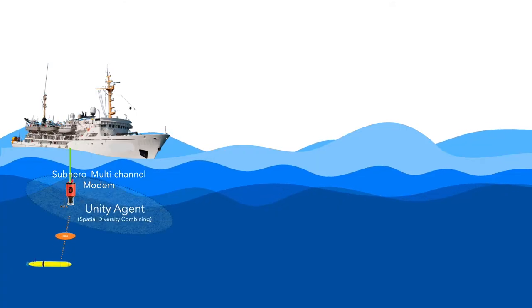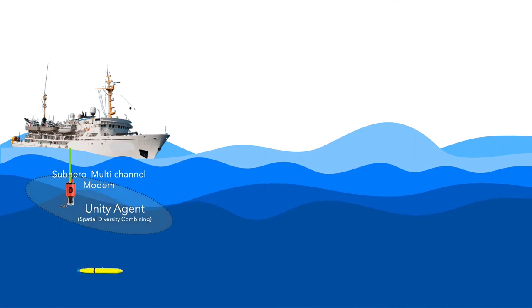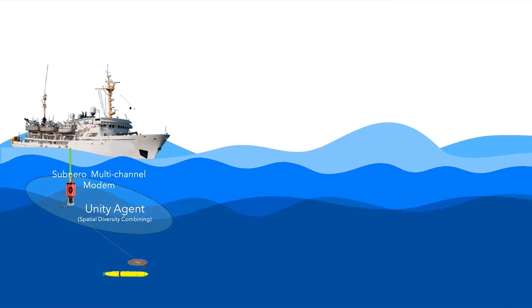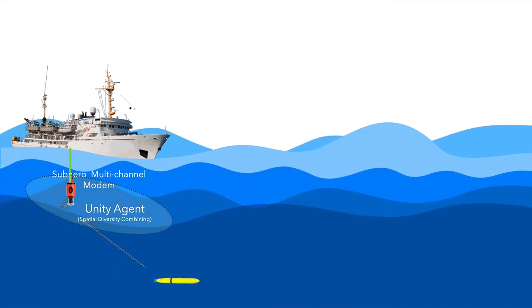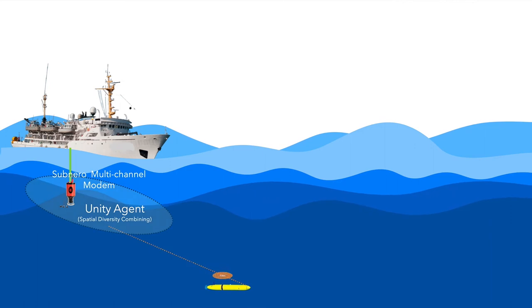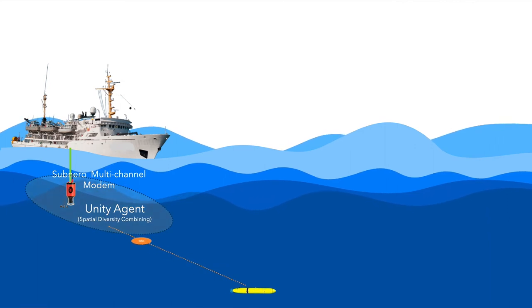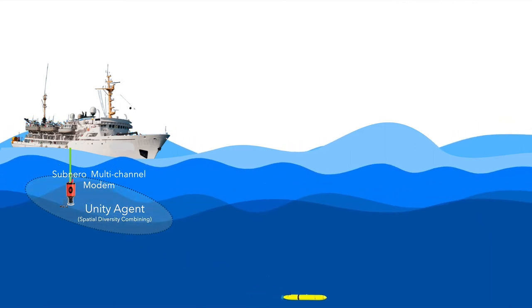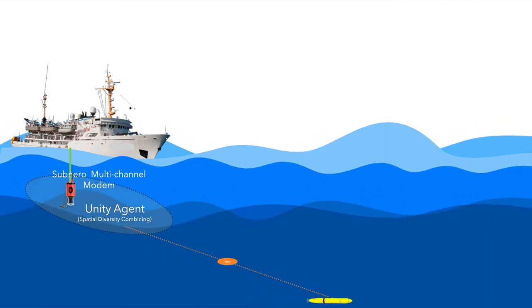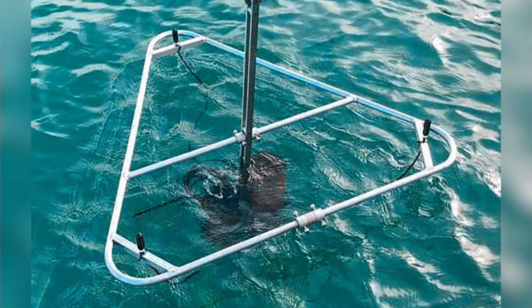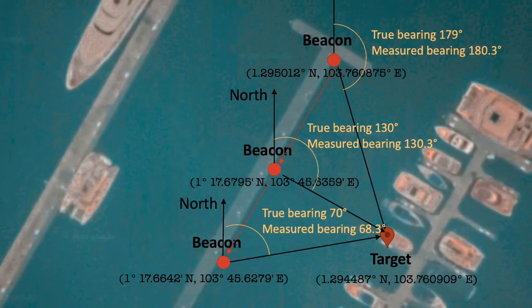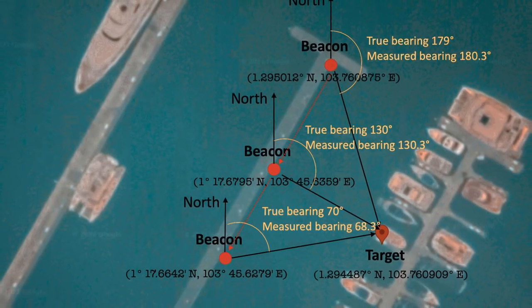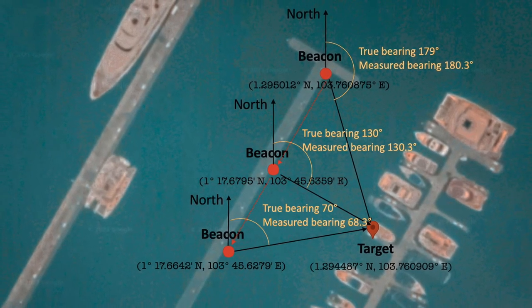These devices use spatial diversity combining techniques to decode transmissions from remote modems, which increases the effective communication range by acting as a spatial diversity receiver. By combining techniques such as time or phase difference of arrival with the data from these sensors, three-dimensional positioning and tracking is also available with multi-channel modems.